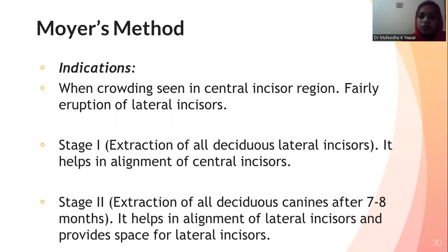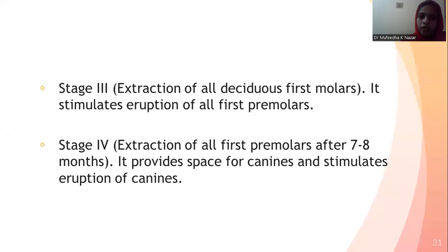Moyer's method is indicated in cases where crowding is seen only in the central incisor region. It involves four stages. Stage one includes extraction of all deciduous lateral incisors to allow alignment of the central incisors. Stage two is extraction of all deciduous canines, done after seven to eight months, to help in alignment and provide space for lateral incisors. Stage three is extraction of all deciduous first molars, which stimulates eruption of first premolars. Stage four is extraction of the erupted premolars after seven to eight months, providing space for canines and stimulating their eruption.